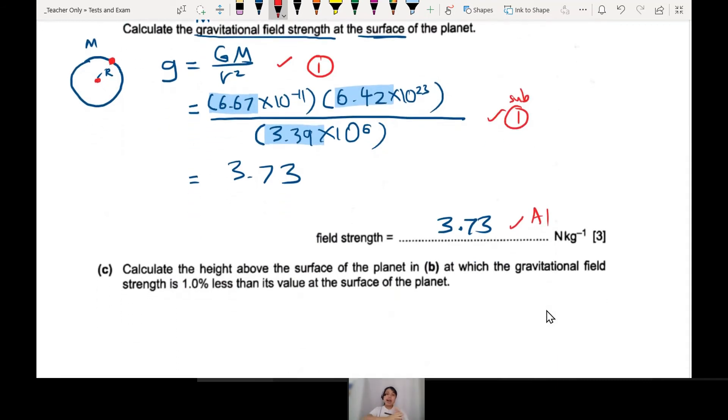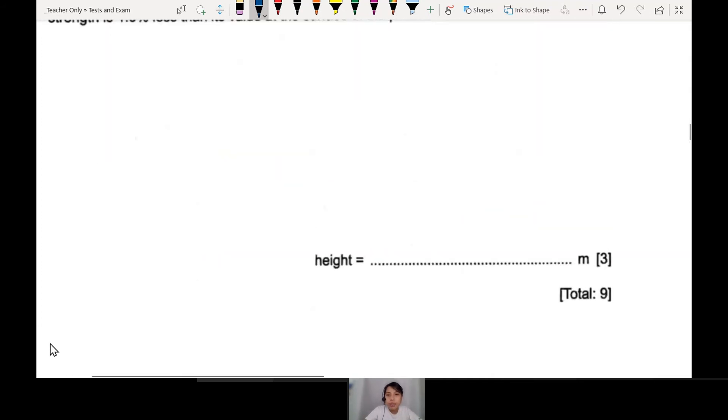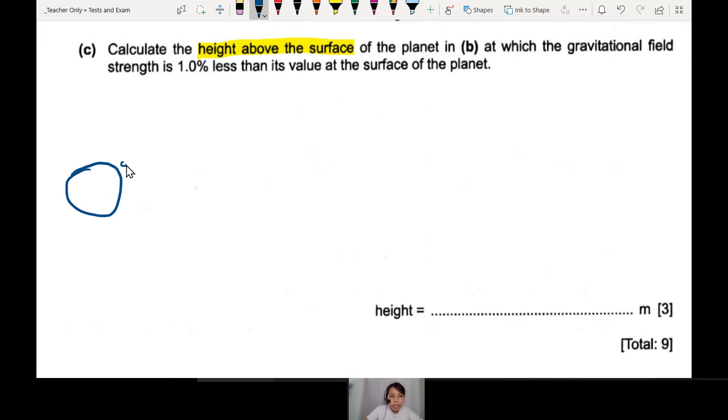Part c, calculate the height above the surface of the planet where the g field strength is one percent less than its value at the surface of the planet. So many words! Let's read this. Now you're calculating the height above the surface where the g field is one percent less than its value at the surface. So I redraw a bit. Here you have the planet. We know g at the surface already, but now you are at a certain height above, so this is a new g. G at the surface, now you go up some more certain height h - that h is what we're trying to find.